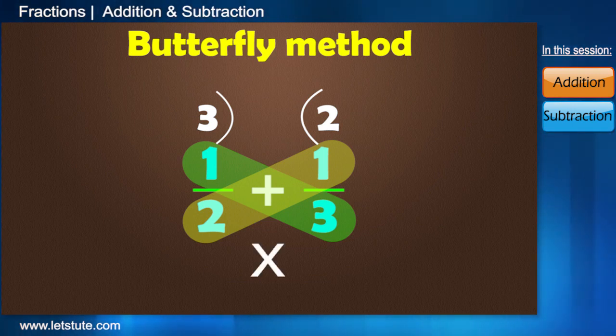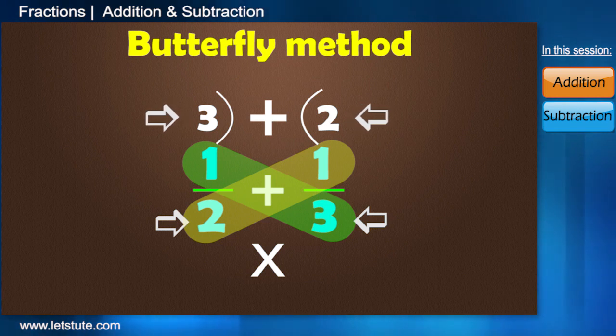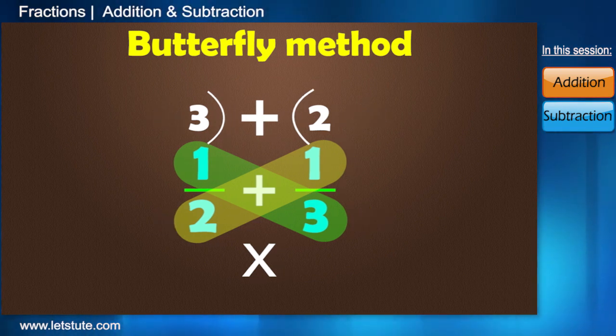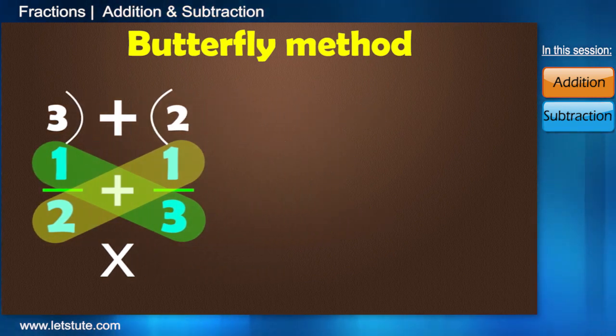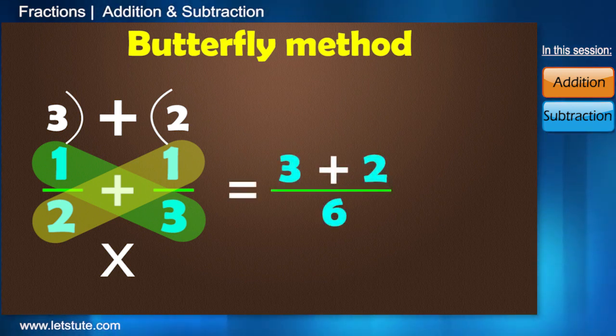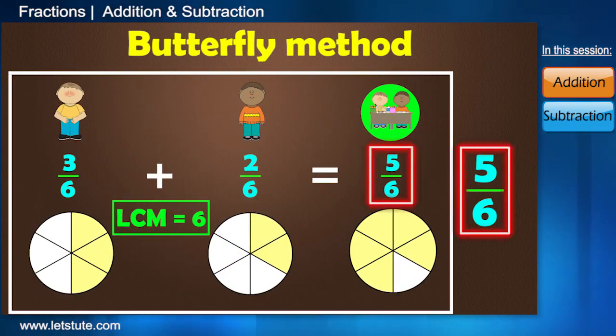And then, we multiply both the denominators and add the numerators. Which will give us to 3 plus 2 divided by 6. That is 5 by 6. Aren't the answers same?